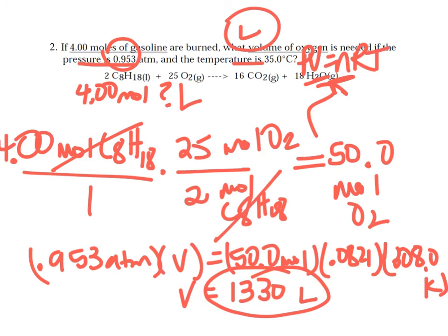So when we're not at STP, we use the Ideal Gas Law, either to find moles or to find volume, depending on the problem. Hopefully now you know how to do stoichiometry problems with gases.